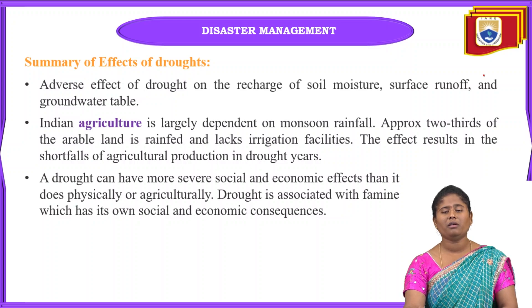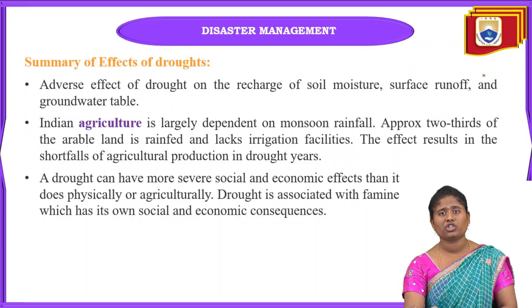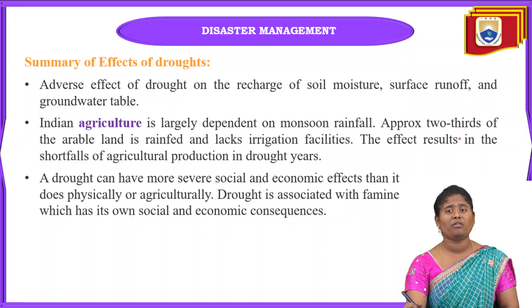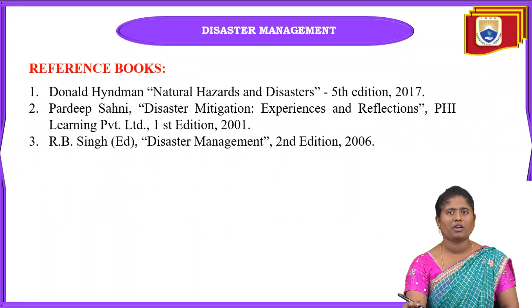To summarize the effects of droughts: there is a reduction in soil moisture recharge, reduction in surface runoff, and a falling groundwater table. Droughts mainly affect agricultural fields that depend on monsoon rainfall — less precipitation leads to a lack of irrigation facilities and shortfalls in agricultural production in coming years. This causes significant economic loss for the country and state, and is associated with famine and social and economic consequences.